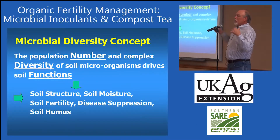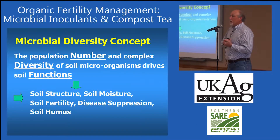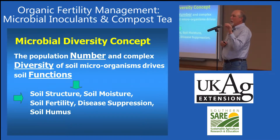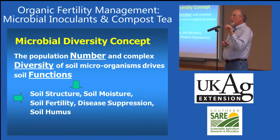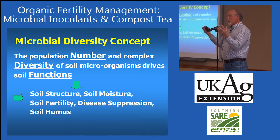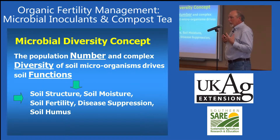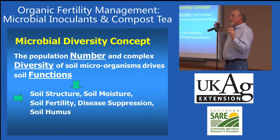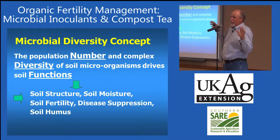This is the microbial diversity concept: it's the number and diversity of microorganisms that live on the leaf surfaces and the root surfaces that influence nutrient availability, that influence biological suppression of diseases, and in the soil it influences the soil moisture retention because it builds the organic matter and it builds the structure of the soil. This is really a key thing, universally applied across the board in agriculture.